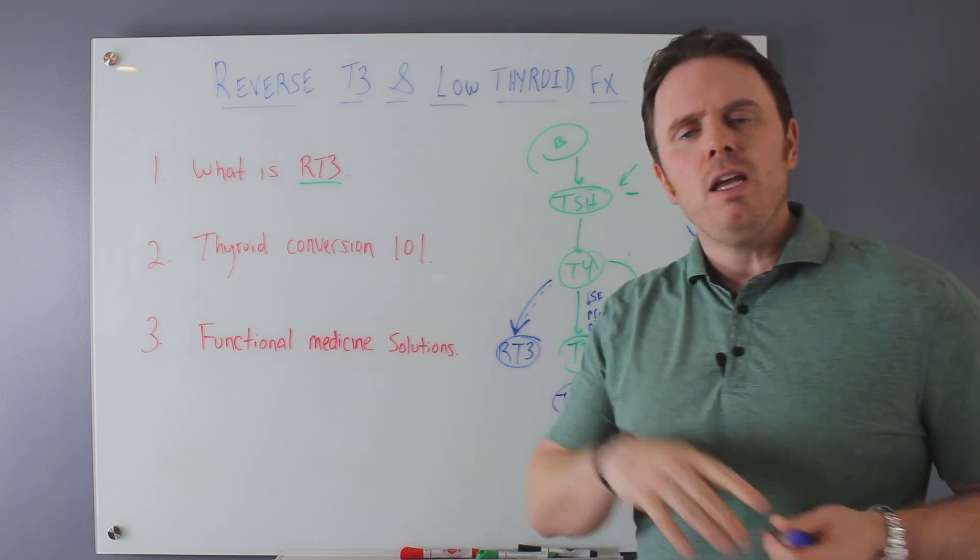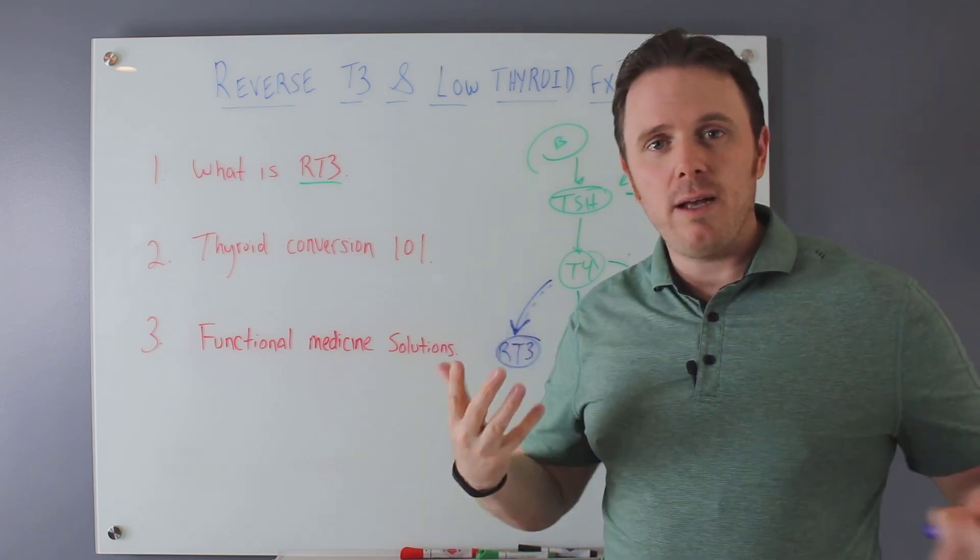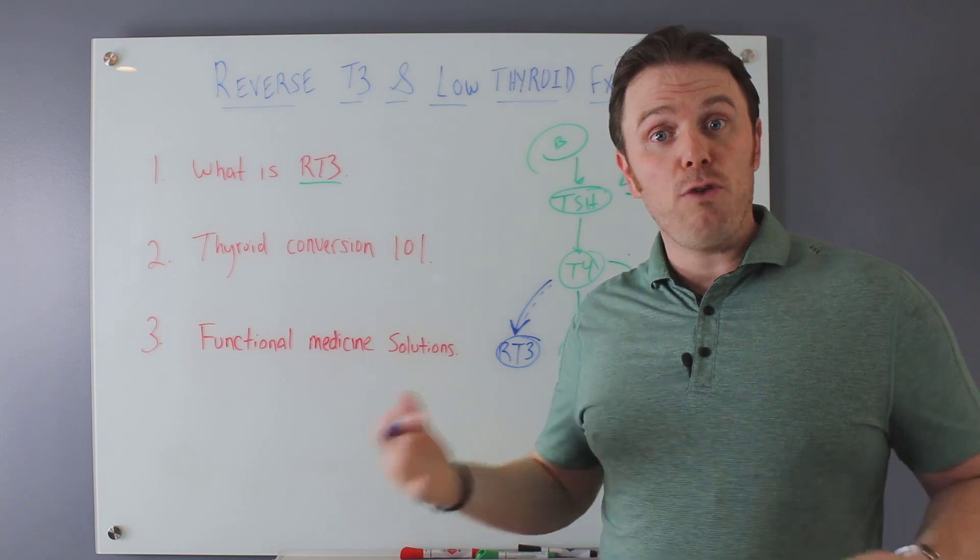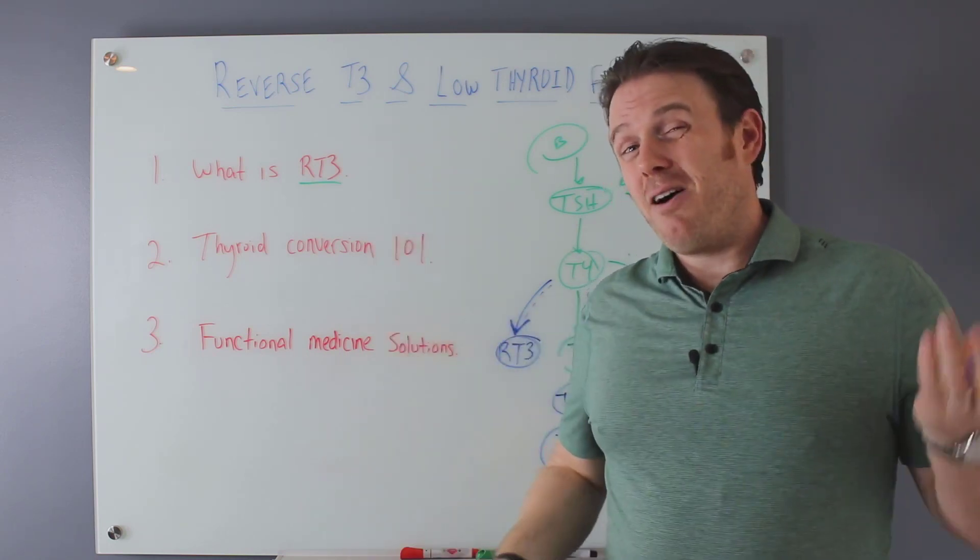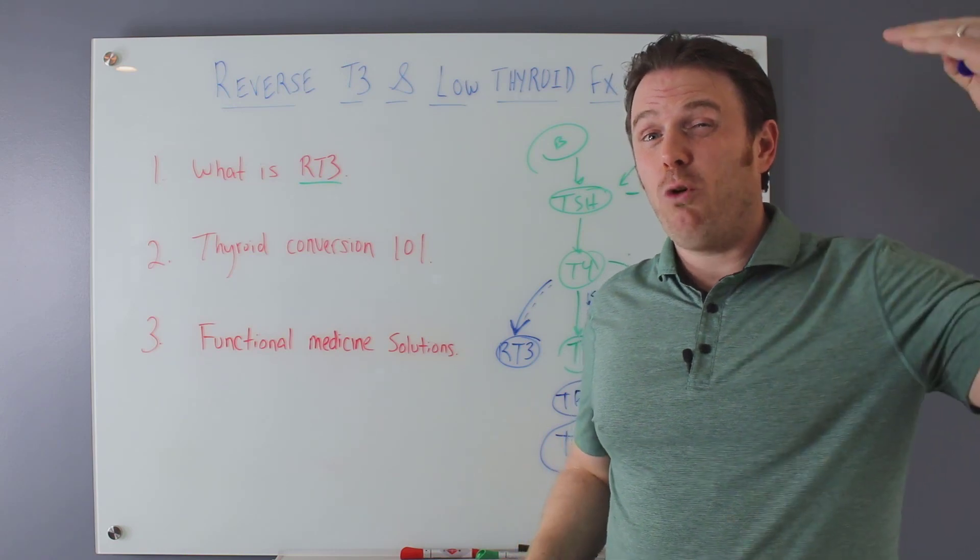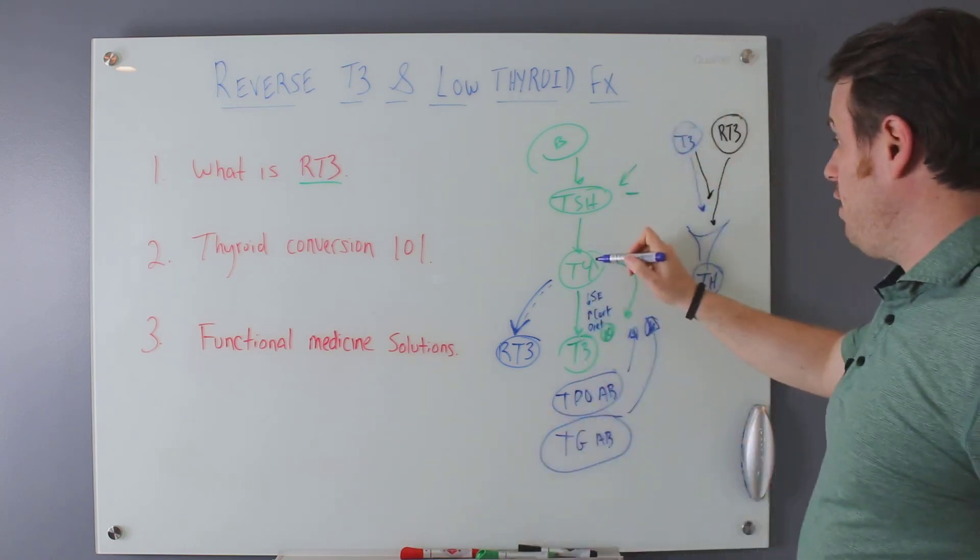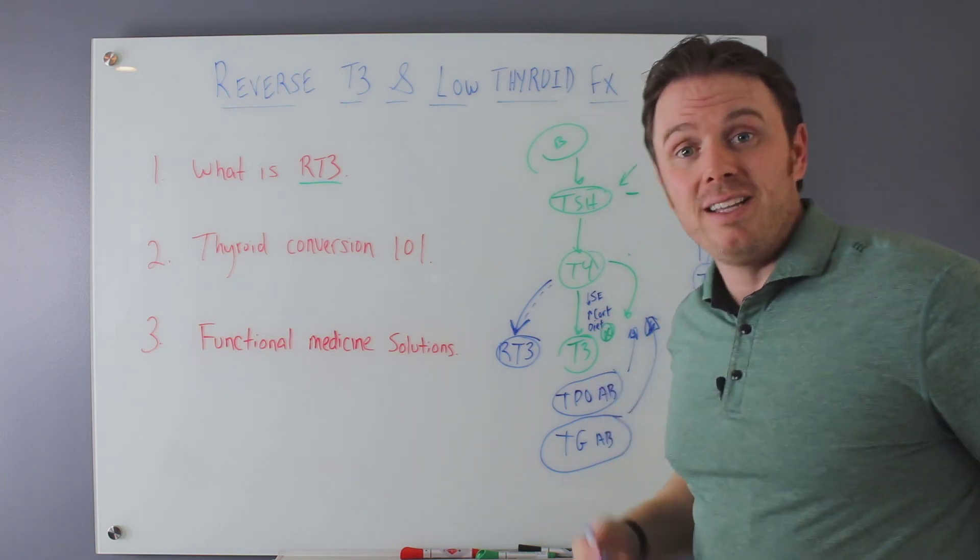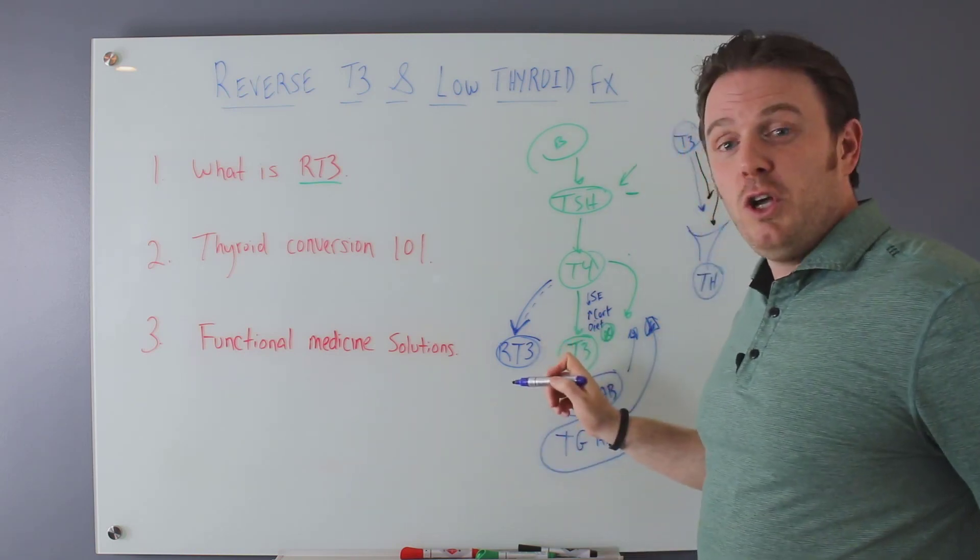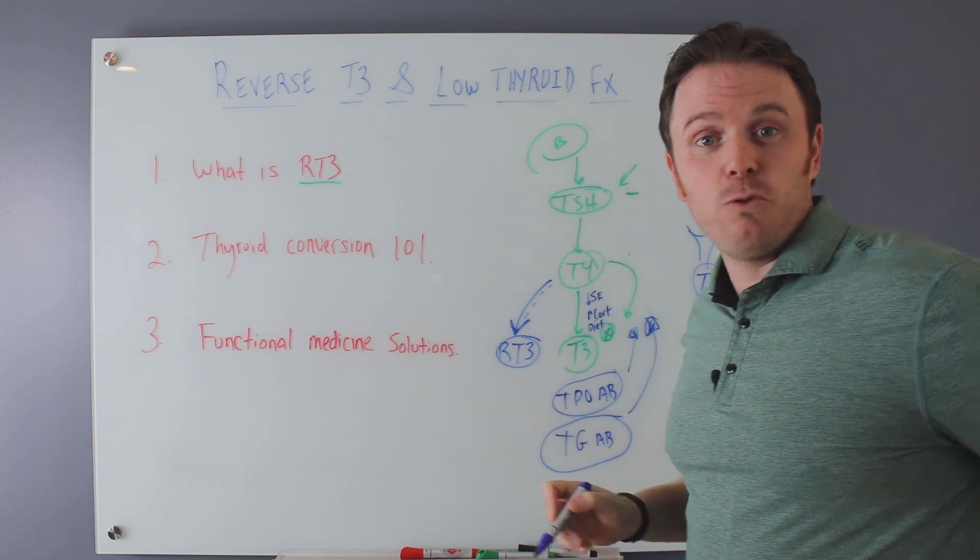So if you have a thyroid issue, make sure you look at reverse T3. A lot of times we can see reverse T3 indirectly through low free T3. If there's low free T3, a lot of times there could be a high amount of reverse T3, especially if T4 looks good. If T4 is good here and it's adequate, and we see a very low level of free T3, then there's probably a conversion issue where it's going downstream to reverse T3.